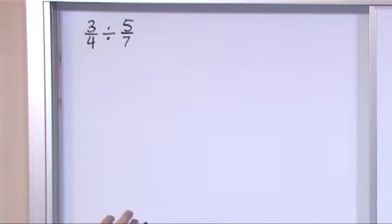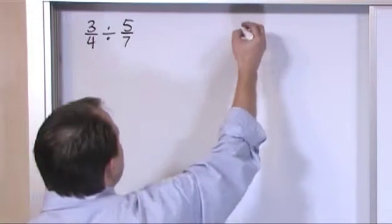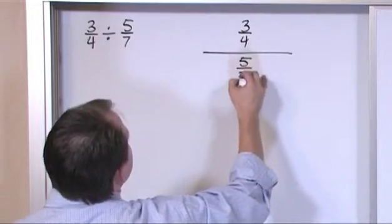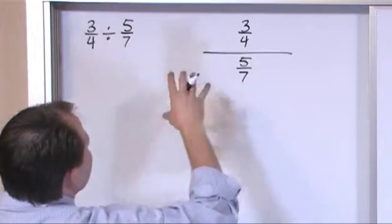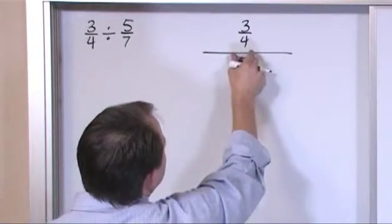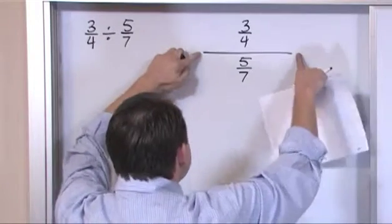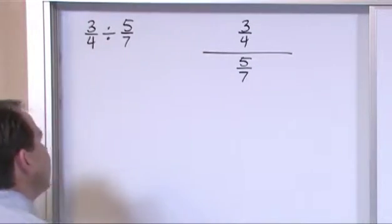Now in your mind, I want you to think that this is the same as 3 fourths divided by 5 sevenths. I'm drawing a longer line here to kind of show you, because if I cut it off like this, then it would look kind of weird with all the lines there. But this fraction 3 fourths divided by this fraction here, that's really what you're doing.